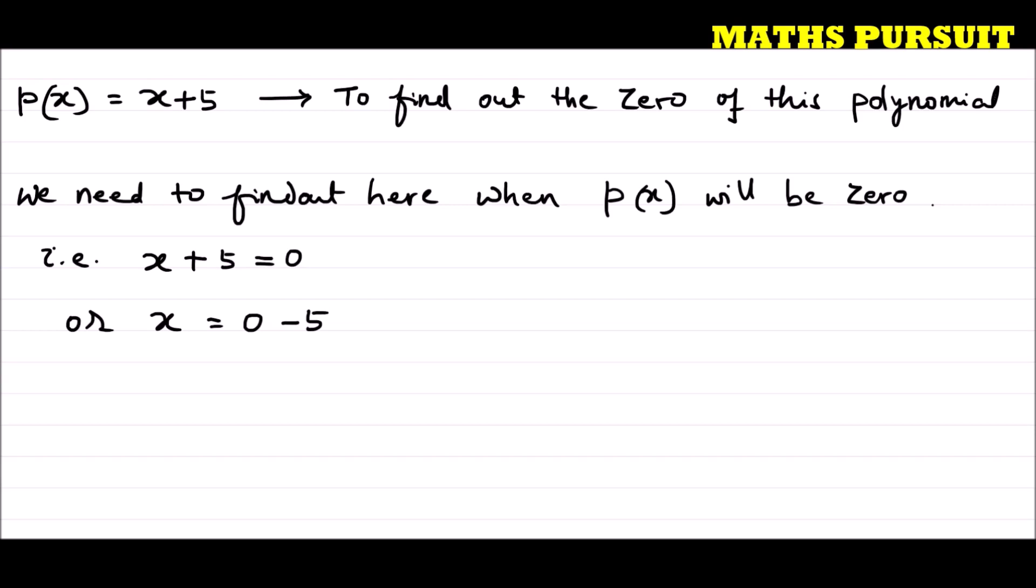How? Just moving plus 5 from left hand side to right hand side, so it became 0 - 5, or in other words I can say x = -5. So what we got here is x = -5. This is our answer.